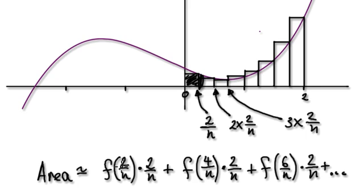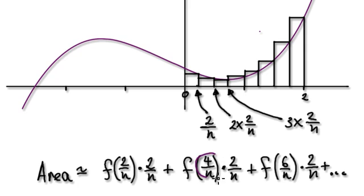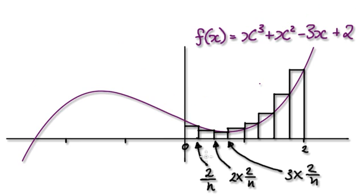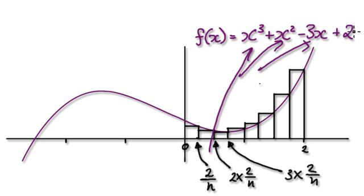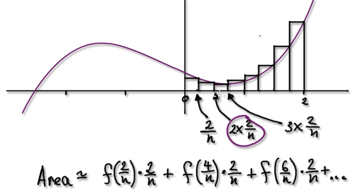The whole thing here represents the height. The first area here has a height given by the function evaluated at 2k/n, times the width, which is delta x — that's the first strip area. The second area uses the x coordinate for that strip, which is 4 over n. So you put 4 over n into the original function, and the whole thing represents the height. This bit here represents a height, and the width is given by this.